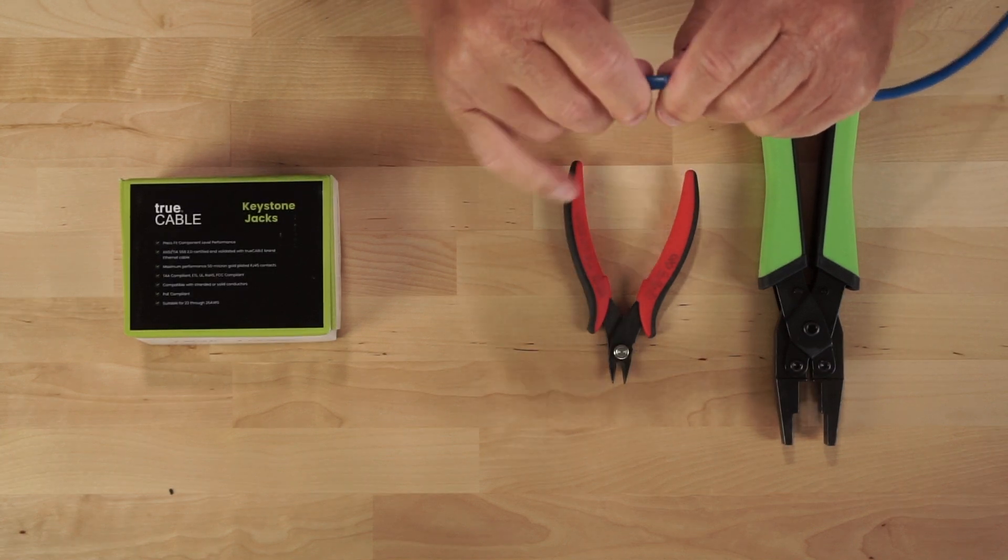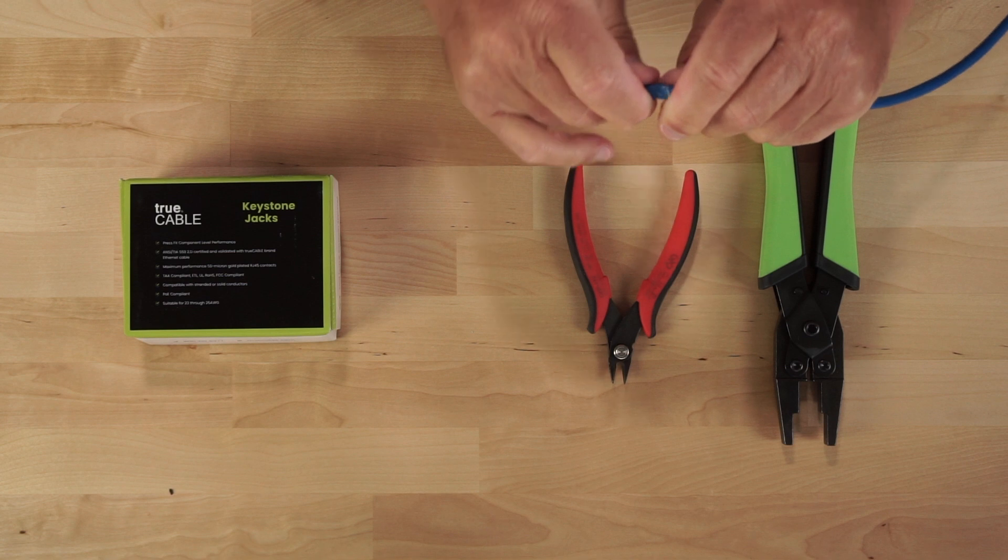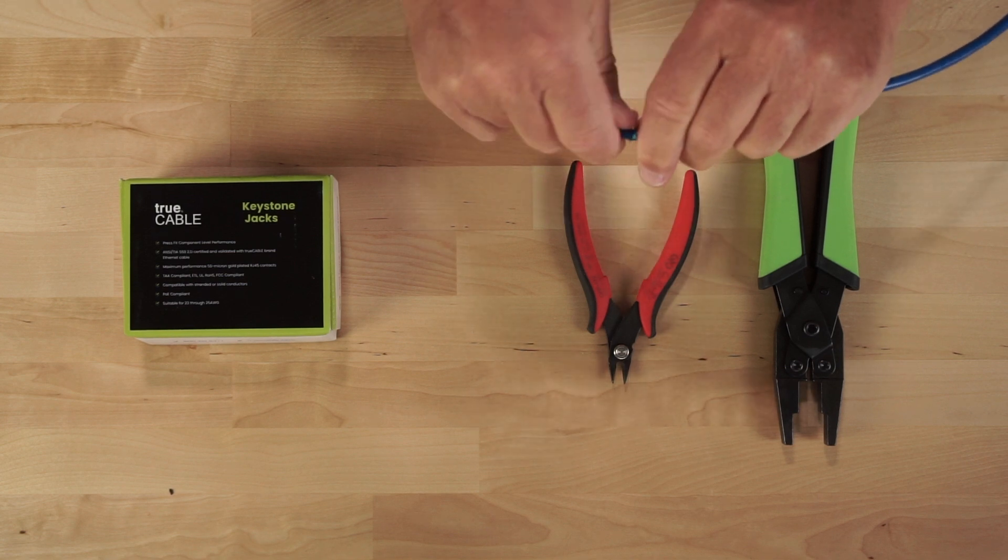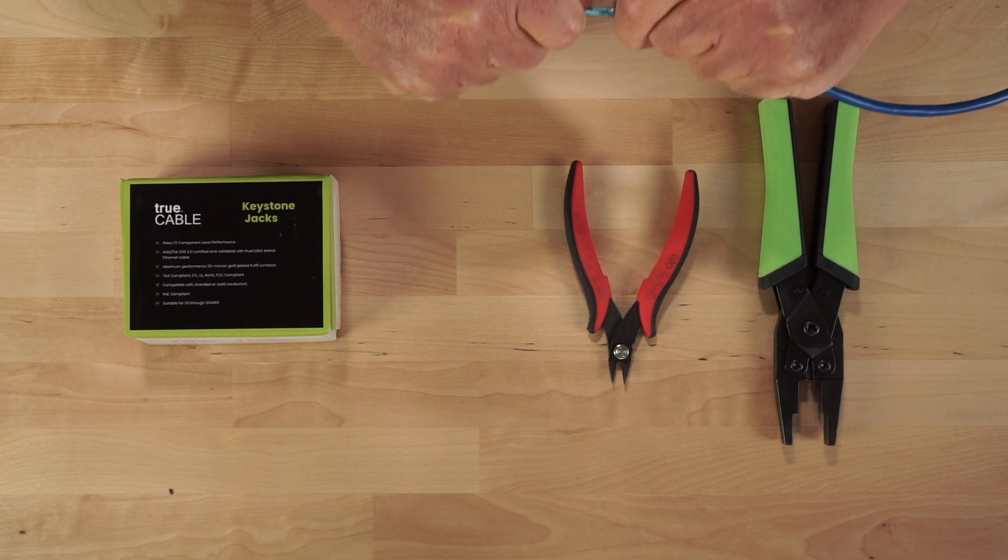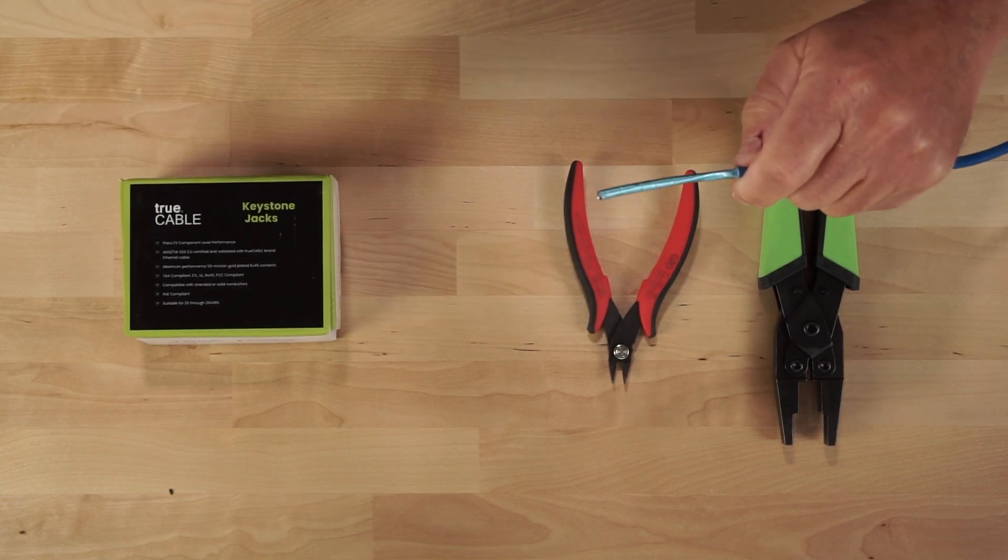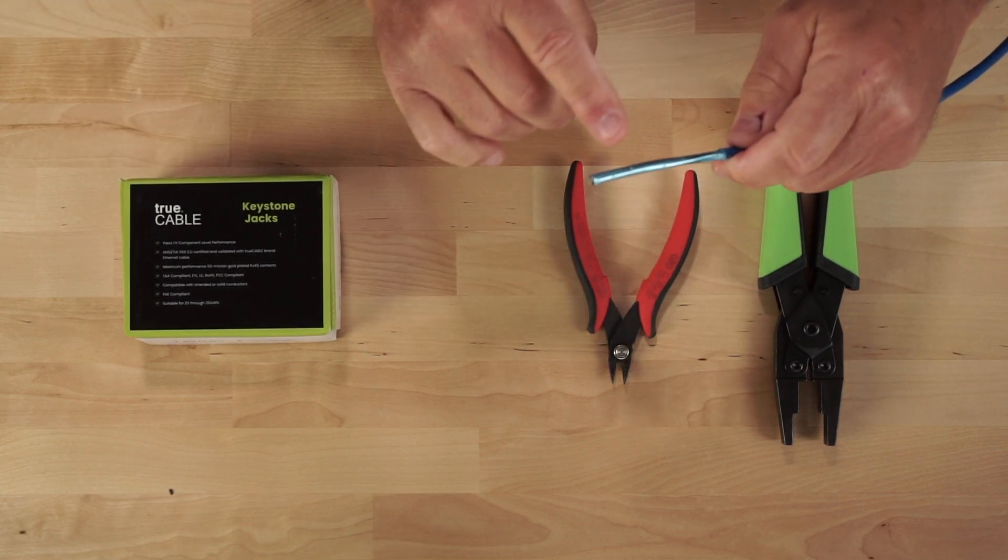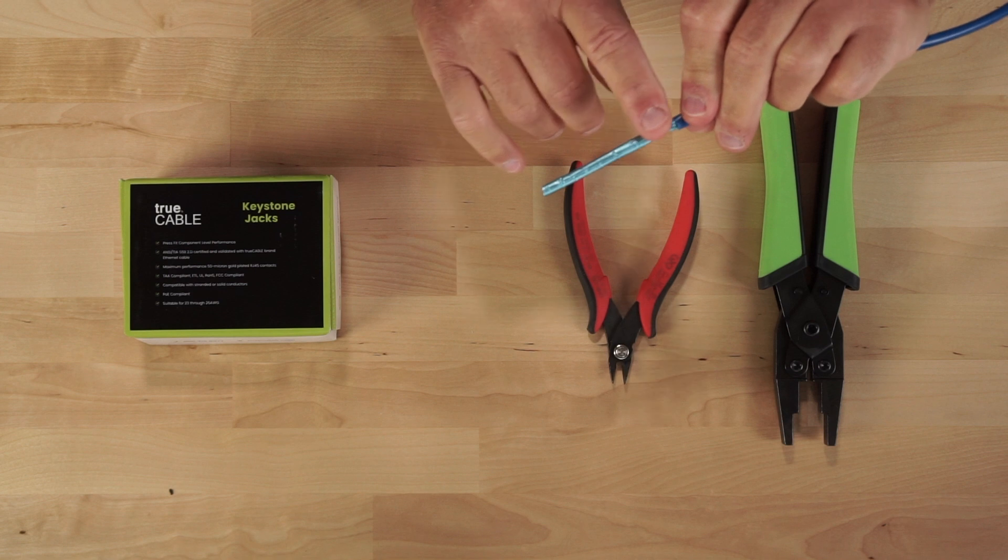However, if for some reason the jacket doesn't pop nicely and you end up removing the shield, I'll show you exactly how I work around that. It's not the greatest workaround, but this one seems to be splitting pretty well, so you just pull, and I actually got lucky there. You can see I still have the shield intact, so that's a good thing.